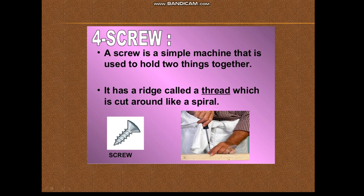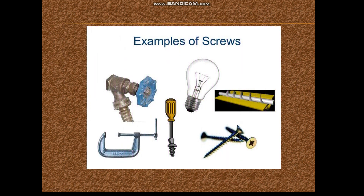Screws: a screw is actually an inclined plane wrapped around a cylinder that has a sharp pointed edge. Screws are turned with the help of a screwdriver; as they rotate they also move forward, so they help to attach things to each other. Light bulbs, water taps, bottle caps, and safety pins are all examples of screws.